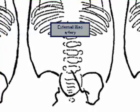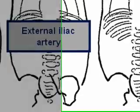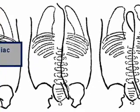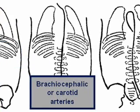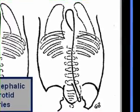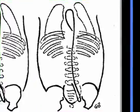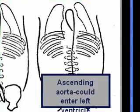This catheter is in the external iliac artery. This catheter tip is in the brachiocephalic or carotid arteries. And this catheter tip is in the ascending aorta and could enter the left ventricle.